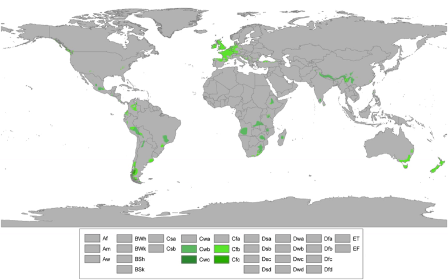Overall temperature characteristics of the oceanic climates feature cool temperatures and infrequent extremes of temperature. In the Köppen climate classification, oceanic climates have a mean temperature of 0 degrees Celsius or minus 3 degrees Celsius or higher in the coldest month.